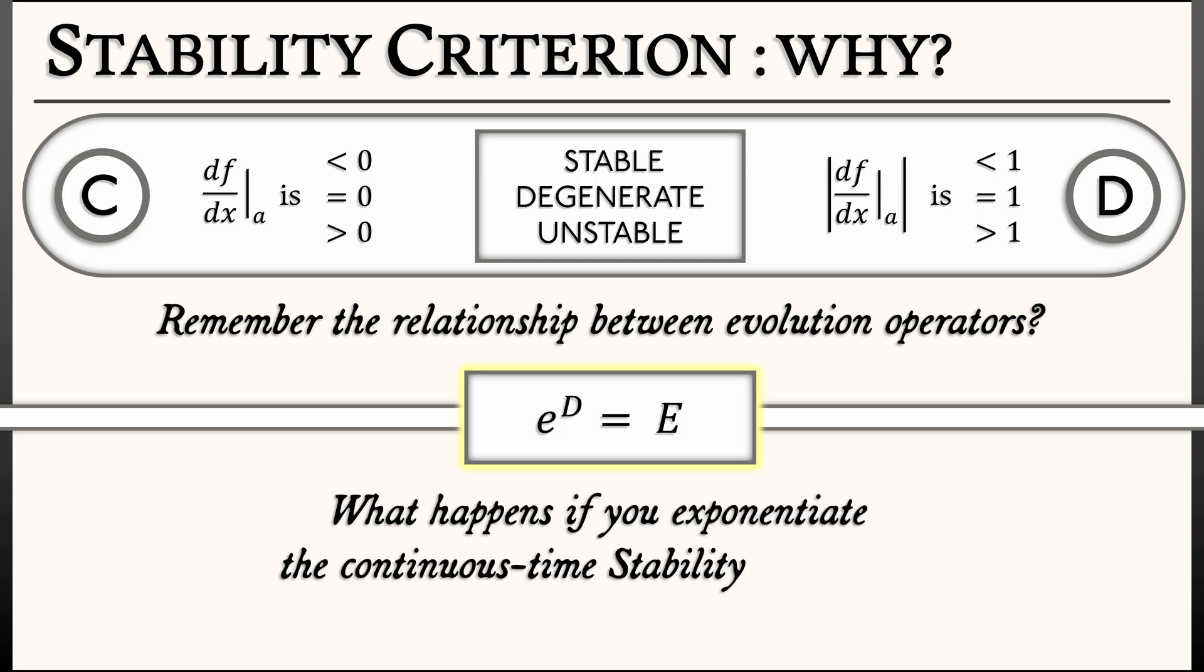Now, what does that have to do with the stability criterion? What happens if you take the continuous time stability criterion and you exponentiate it? What happens if you exponentiate a negative number? Hmm, you get something that's less than 1.